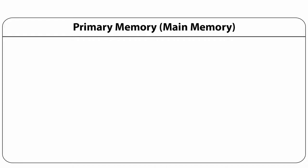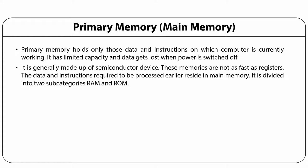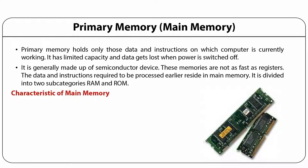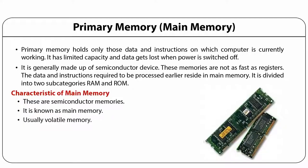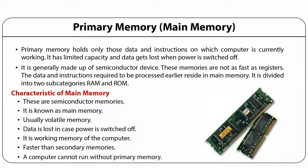Primary memory holds only those data and instructions on which the computer is currently working. It has limited capability and data gets lost when power is switched off. It is generally made up of semiconductor devices and divided into two subcategories: RAM and ROM — random access memory and read only memory. The main memory is volatile, meaning data is lost if power is switched off. It is faster than all secondary memories and a computer cannot run without primary memory.